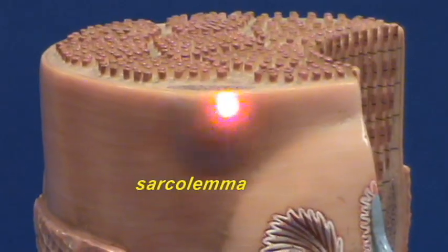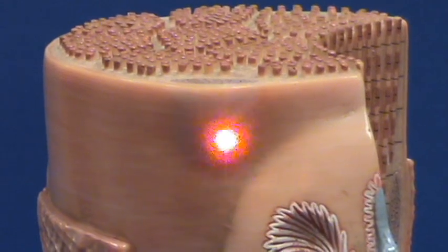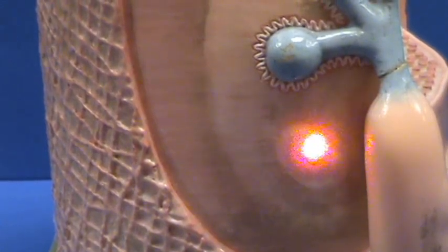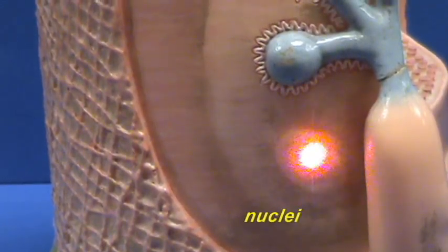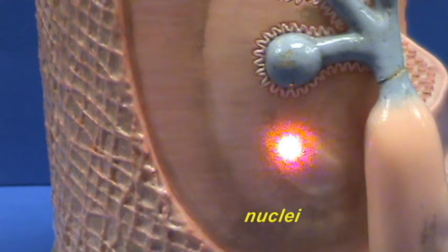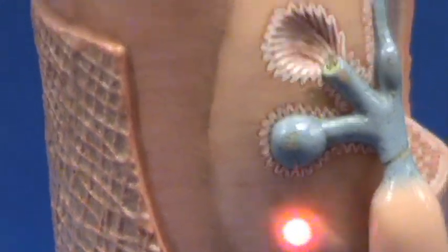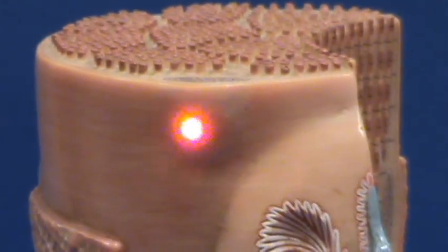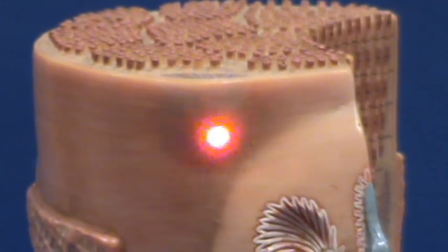This bulge underneath the sarcolemma, which you see right over here, and which you can also see right over here, represents the location of nuclei. So the skeletal muscle fiber is multi-nucleate. It has many nuclei. And these nuclei are pushed to the edge of the cell and would lie underneath the cell membrane, the sarcolemma.